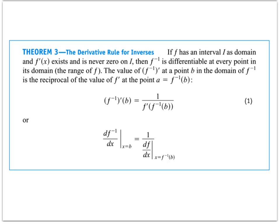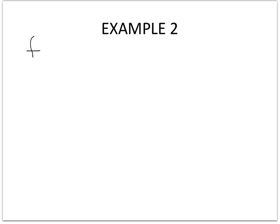Theorem 3 says that if we want to find the derivative of the inverse for a particular function, all we have to do is take 1 over the derivative of the original function evaluated at the inverse. The formulas shown here are how you would actually evaluate this.